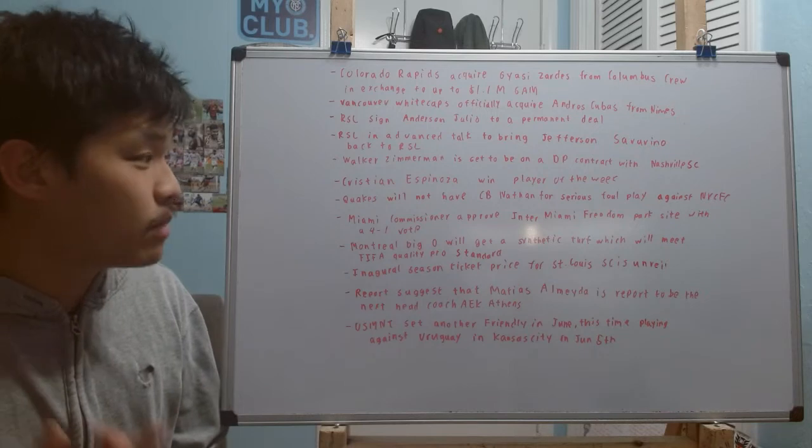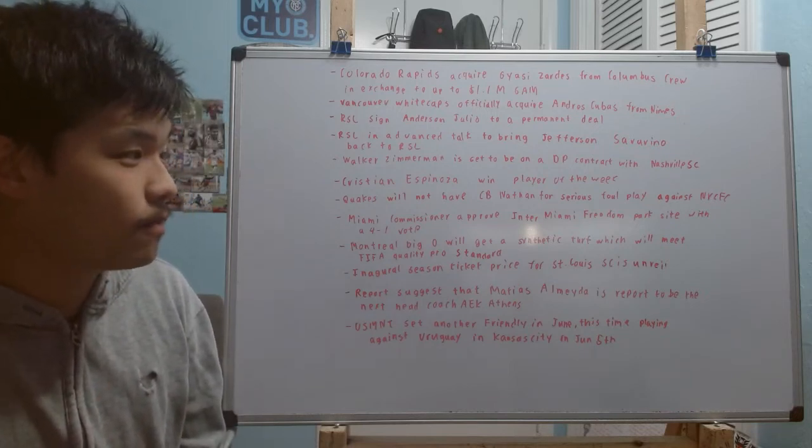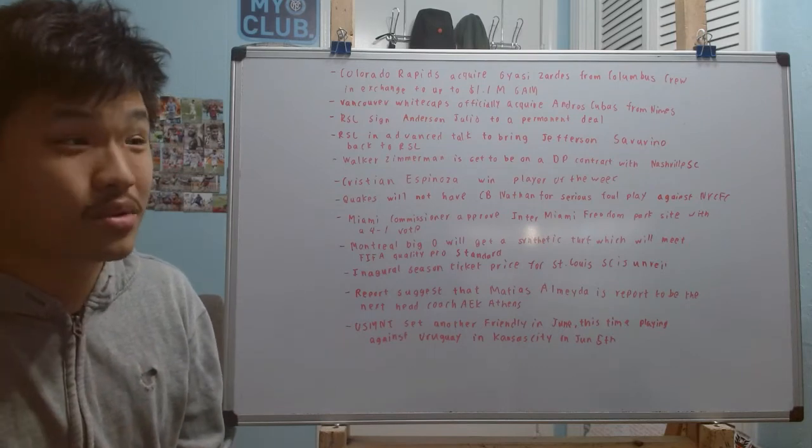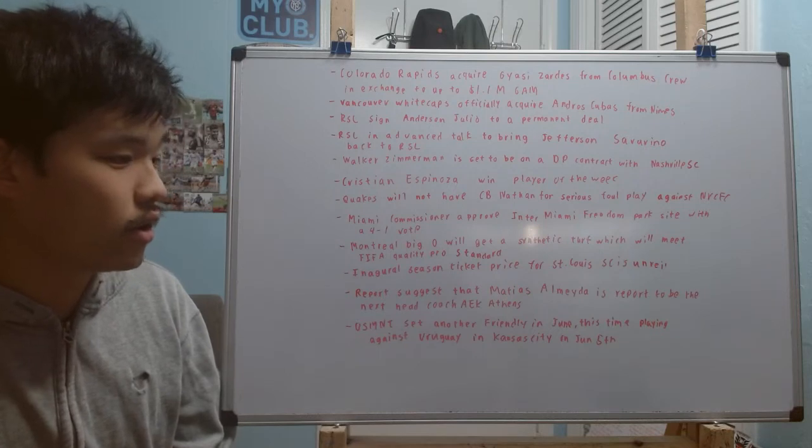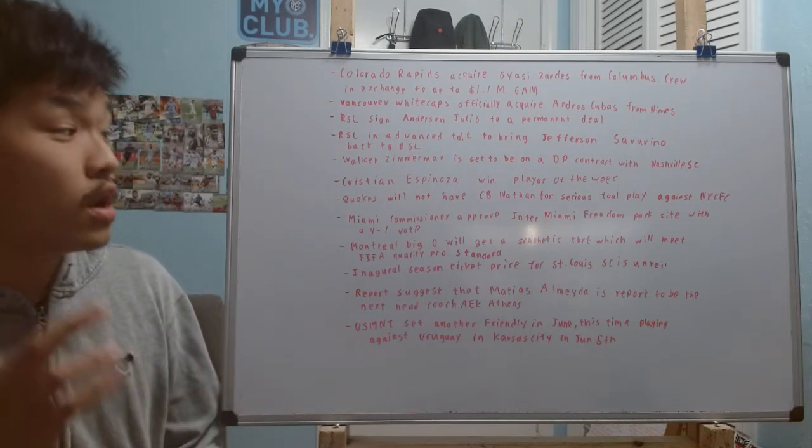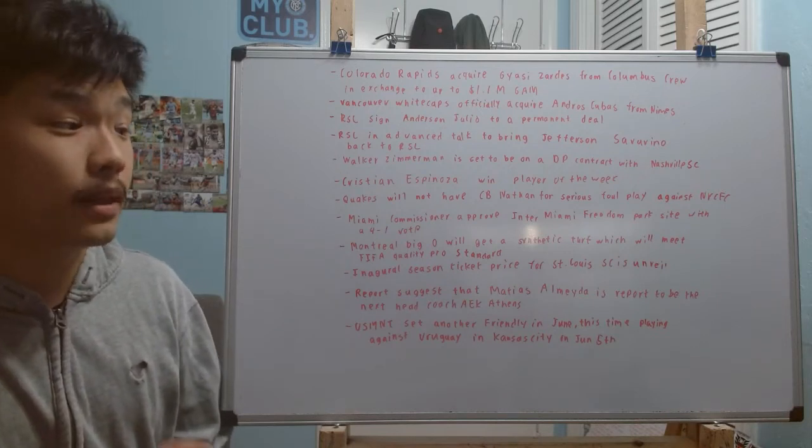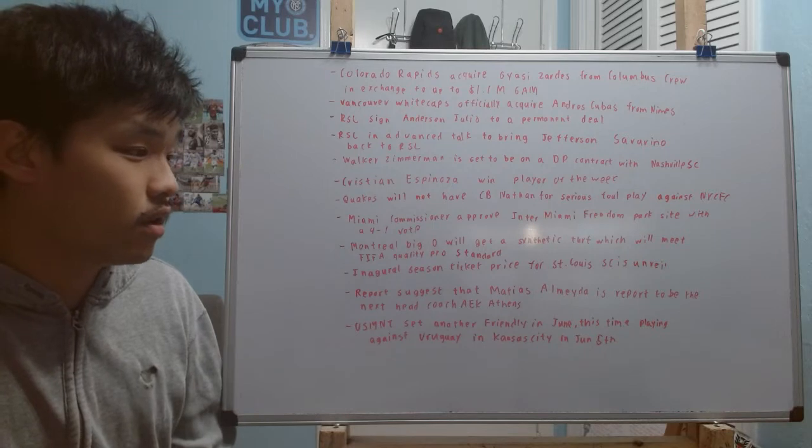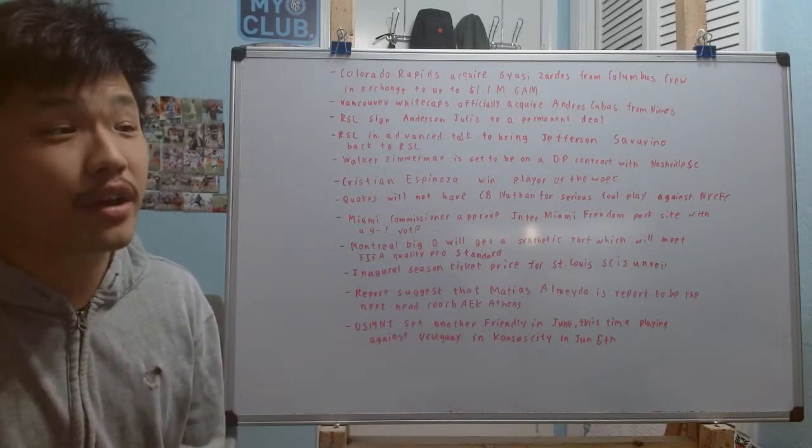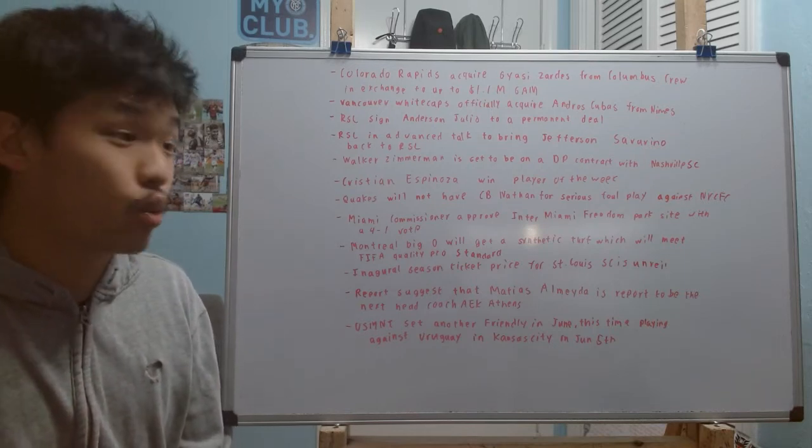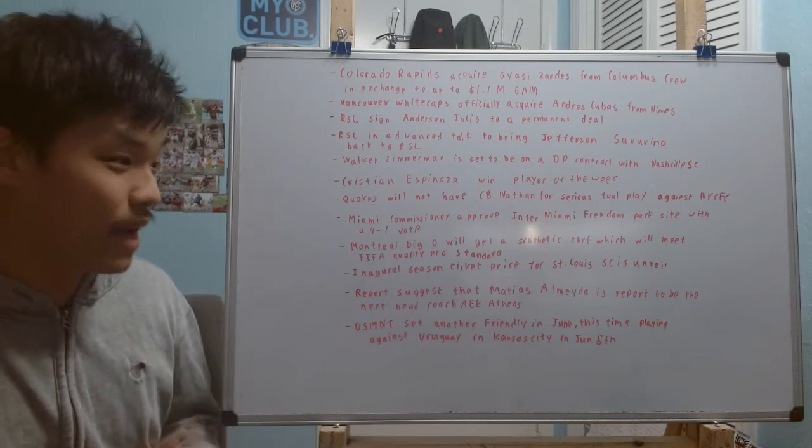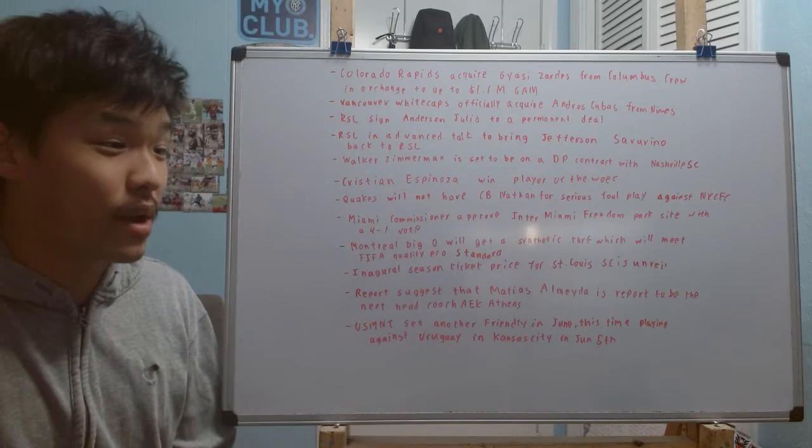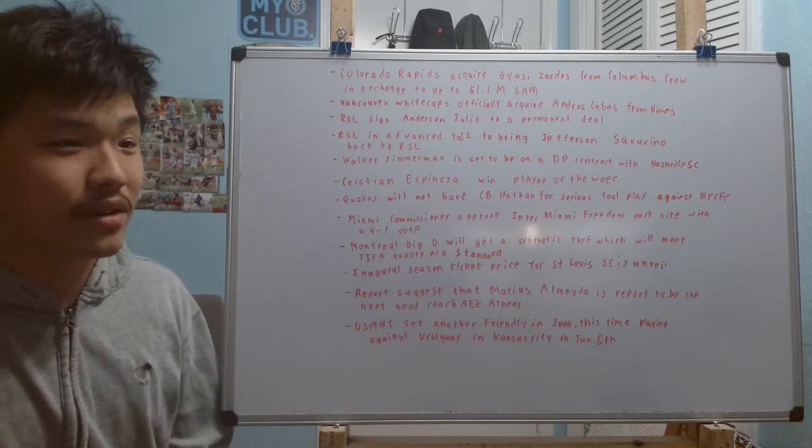Now the bad news for the Quakes is that in the next game, they will not have their best center back Nathan for a serious foul play that he committed in that game against the Sounders against NYCFC. And we all know what that serious foul play is. It's that challenge that he put on Raul Ruidiaz. And as I said before in that review, I thought that should have been a red card and I thought the Quakes were very lucky to not play down the 10 men for the last 80 minutes of that one. You can clearly see that that was a studs up challenge that Nathan basically put on Ruidiaz. And I was kind of surprised that even when the referee got to VAR to check to see whether or not if that is a red card, I was shocked the fact that they decided to not overturn it.